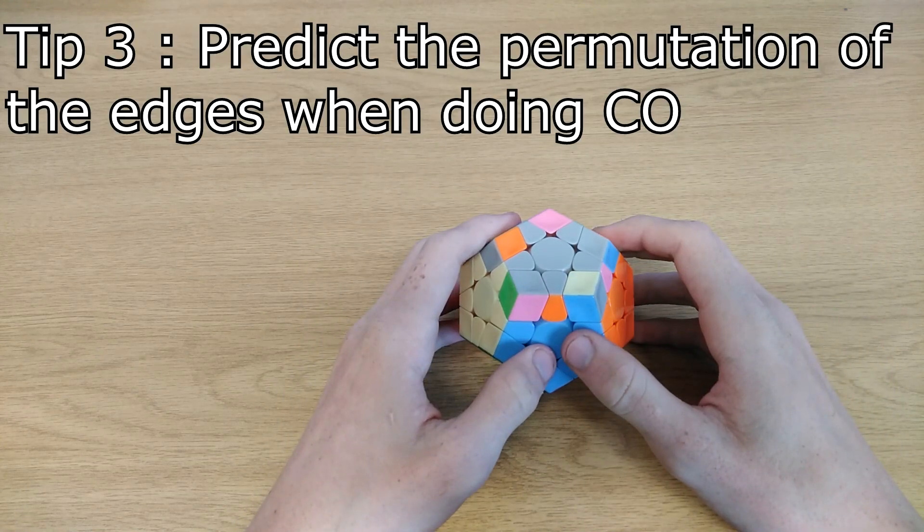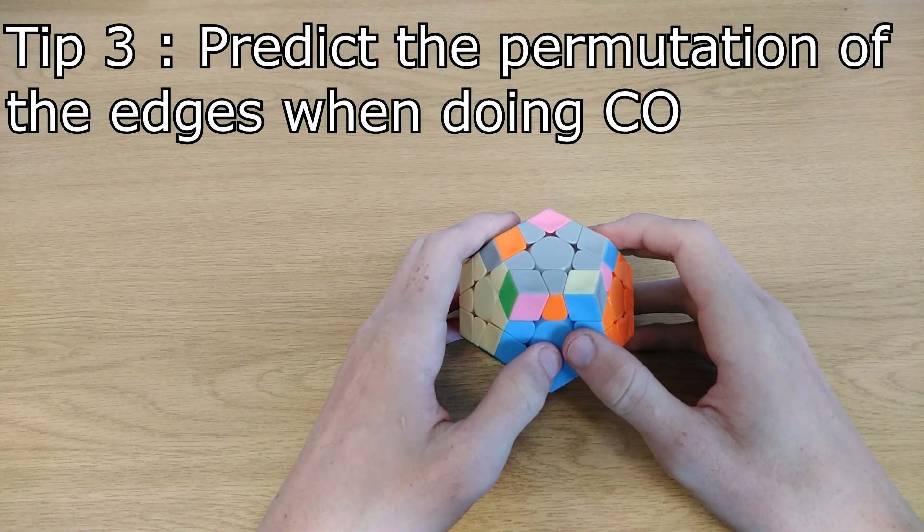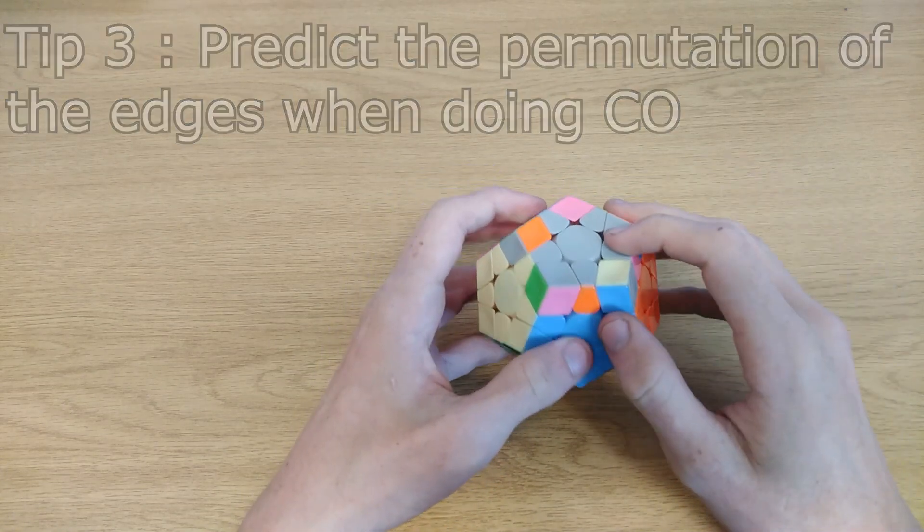Tip 3: Predict the permutation of the edges while you are doing your corner orientation. What I mean by this is, let's take for instance anti-Sune.